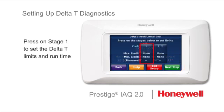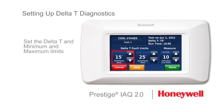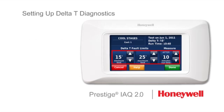Press on stage one to set the Delta T limits and runtime. Set appropriate minimum and maximum Delta T limits based on the Delta T reading from the equipment test and what you consider to be unacceptable system performance. Select a runtime when Delta T began to stabilize during the equipment test. When the thermostat is controlling the system, it will compare Delta T to the minimum and maximum limits after the equipment has run for this length of time.